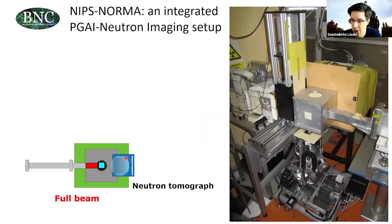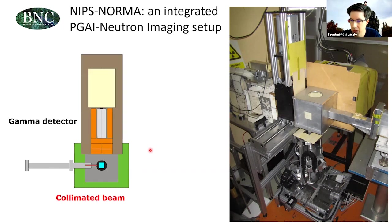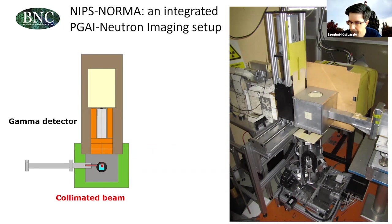The procedure is as follows: first we make a tomography of the sample by rotating it and using the downstream neutron camera at the NORMA station. Once we know the structure of the sample, we can identify interesting parts and using the same turntable — without touching the object — translate or rotate it to the relevant measurement position and acquire a gamma spectrum by the NIPS gamma spectrometer. This gives you the composition of that selected volume. The NIPS-NORMA station is the only facility in the world with this integrated feature of element analysis and neutron imaging.